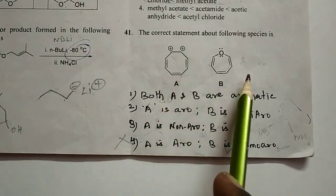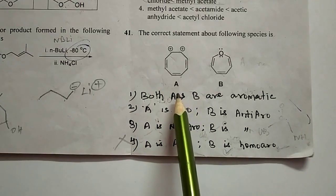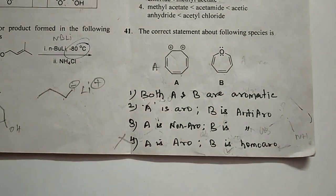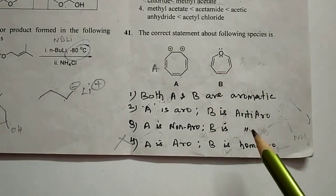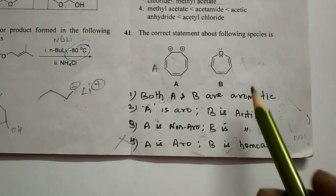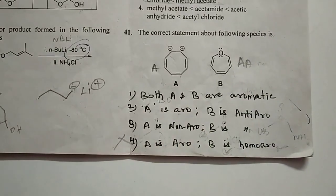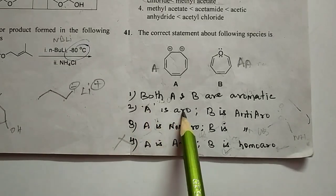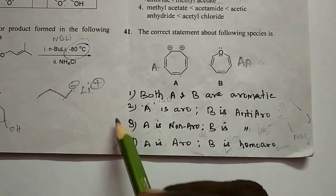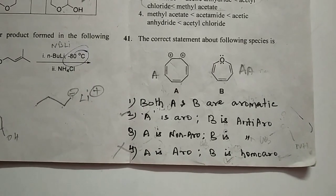Now look at the molecules. The dication has three pairs of pi electrons — three is an odd number, so this is aromatic. The cyclic ether has four pairs of pi electrons — four is an even number, so B is anti-aromatic. So the answer is option 2: A is aromatic, B is anti-aromatic.